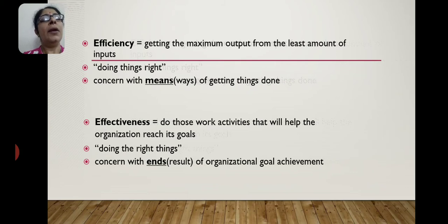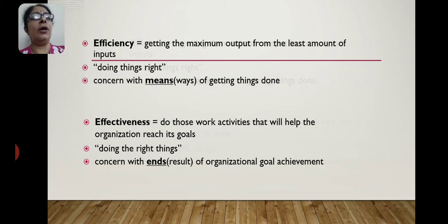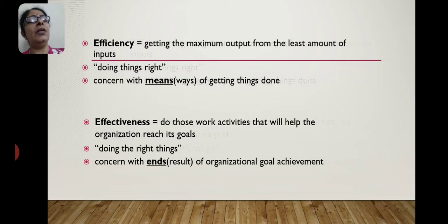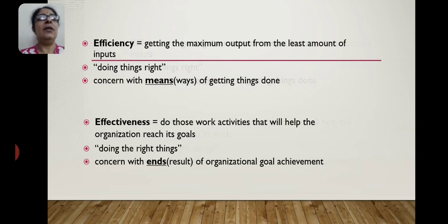Effectiveness ka matlab hai — do those work activities that will help the organization reach its goals. Each organization has some goals and objectives; if we are performing work that helps in achieving those objectives, that work is effective. So effectiveness is doing the right things — sahi kaam karna. Efficiency is doing things in the right way — sahi tarike se karna. Effectiveness deals with results and achieving organization's goals.